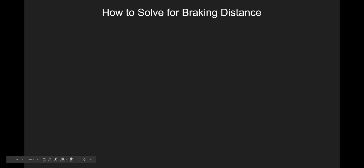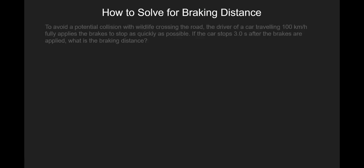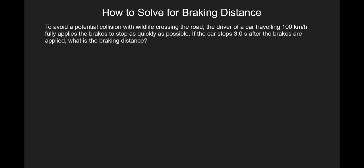How to solve for braking distance. To avoid a potential collision with wildlife crossing the road, the driver of a car traveling 100 kilometers per hour fully applies the brakes to stop as quickly as possible. If the car stops 3 seconds after the brakes are applied, what is the braking distance?